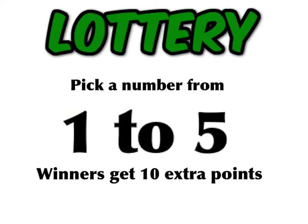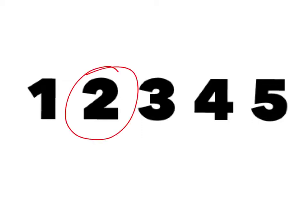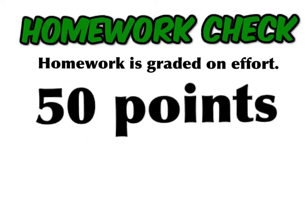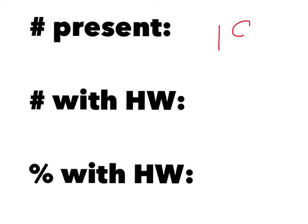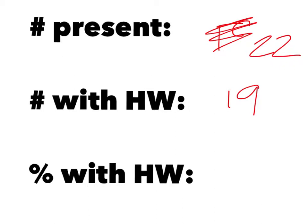Pick a number from 1 to 5. The winning number is 2. If you have your homework finished with all work shown, bring it up here and show it to me. So, 22 people here, 19 with homework. That turns out to be 86%.